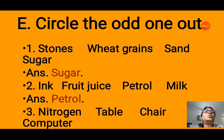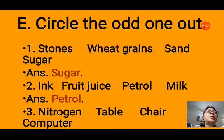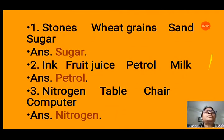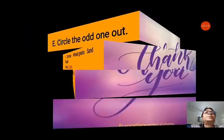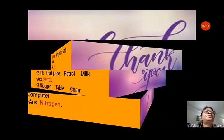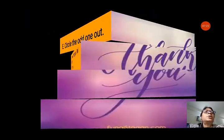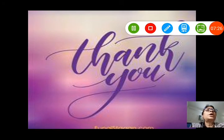Question E: circle the odd one out. First group — stones, wheat grains, sand, sugar: sugar is the odd one because it dissolves in water while the others do not. Second group — ink, fruit juice, petrol, milk: petrol is the odd one because it does not dissolve in water while ink, fruit juice, and milk do. Third group — nitrogen, table, chair, computer: nitrogen is the odd one because table, chair, and computer are solids while nitrogen is a gas. That completes all the exercises — we will meet in the next class. Thank you students, thank you very much.